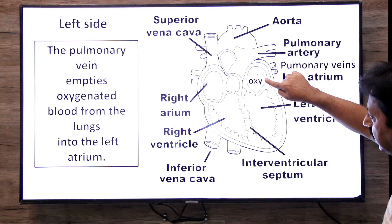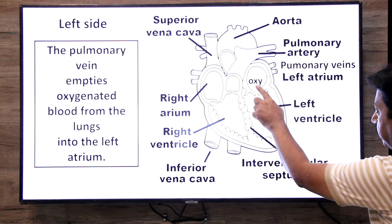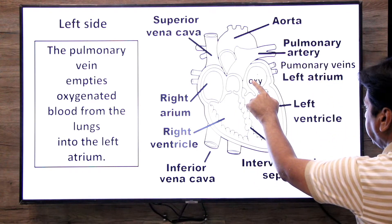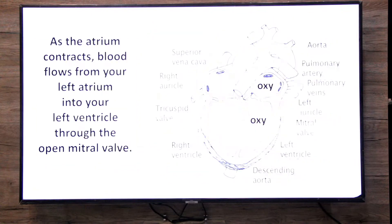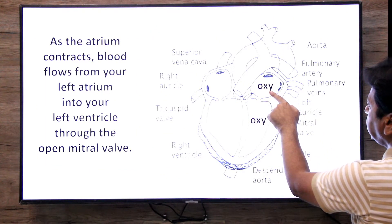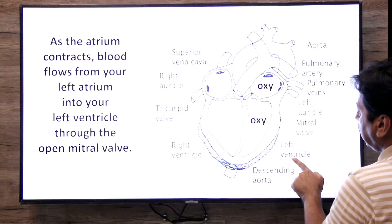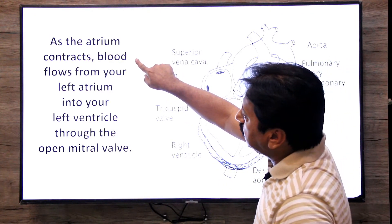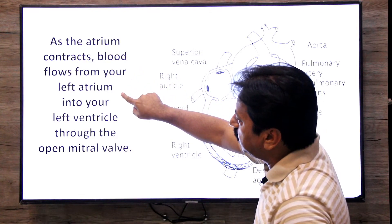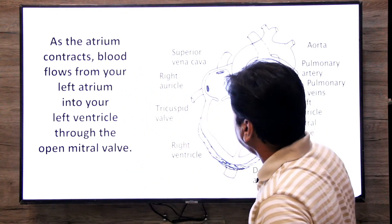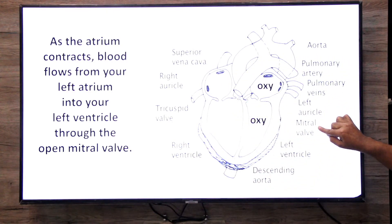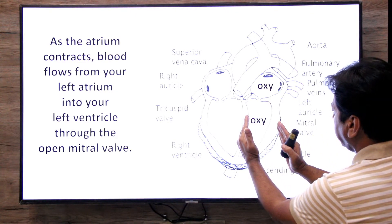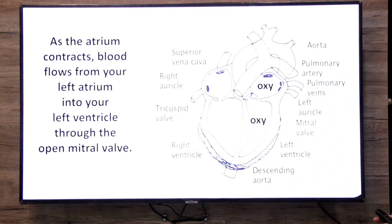When our left atrium contracts in systole, the mitral valve — which is between the left atrium and the left ventricle — opens, and the oxygenated blood flows into the left ventricle. The mitral valve is a bicuspid valve, made up of two flaps. When the left ventricle becomes full of oxygenated blood, the mitral valve closes.